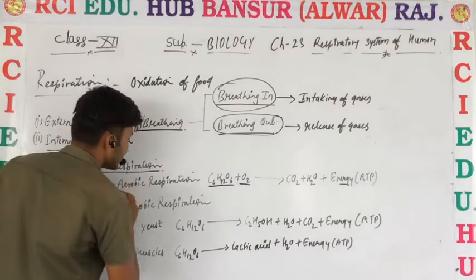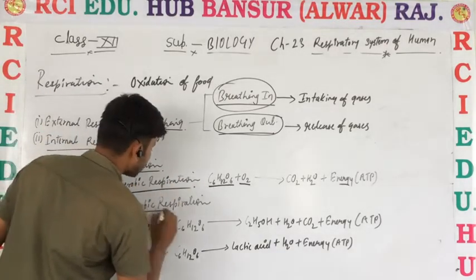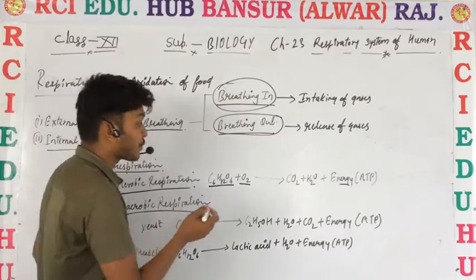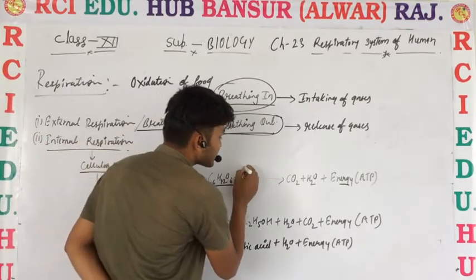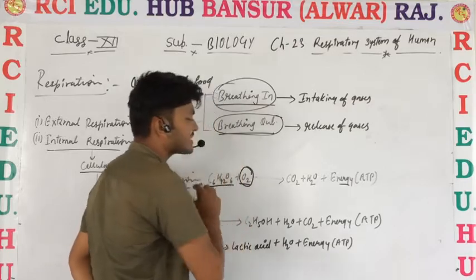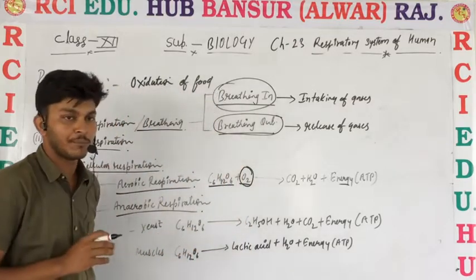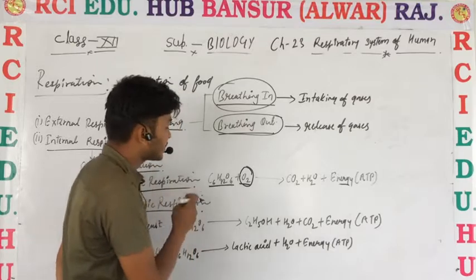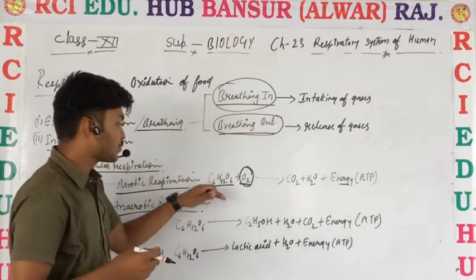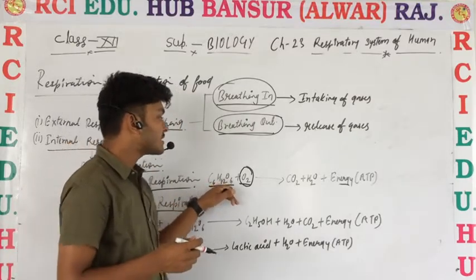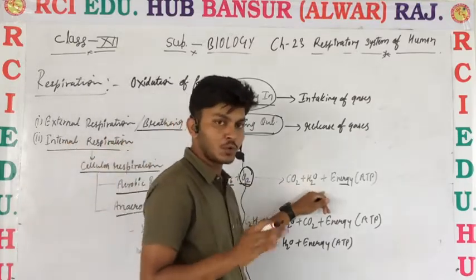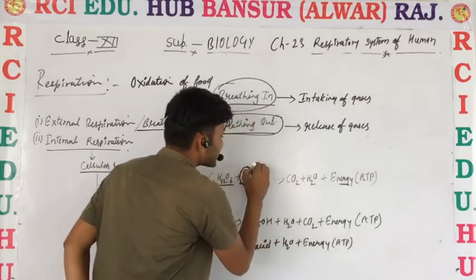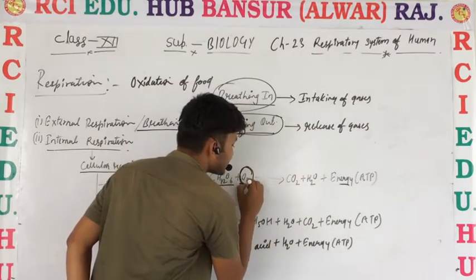Cellular respiration is of two types. Number one is aerobic respiration, and number two is anaerobic respiration. Aerobic respiration is the process of cellular respiration that takes place in the presence of oxygen. In this process, glucose is converted into energy in the presence of oxygen.